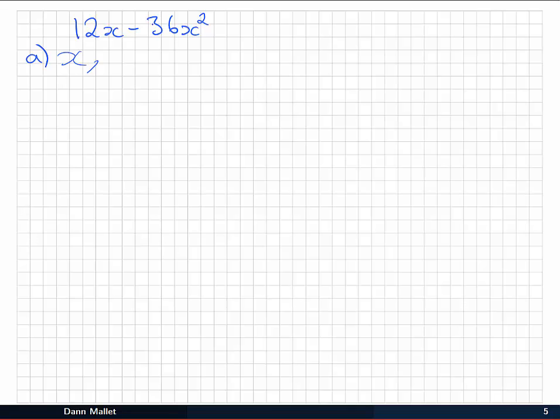But the other thing is they've got these numbers at the front, 12 and 36. Now 36 is just a multiple of 12, 3 times 12. So 12 is also a common factor in the two terms.